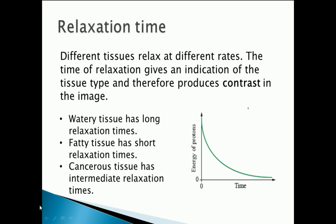The thing that gives you contrast on an MRI image is the fact that different tissues relax at different rates. MRI is very good for soft tissue contrast and distinguishing different types of body structure. The computer in the MRI machine measures the time it takes for the signal to die away, giving an indication of tissue type. For A-level purposes: watery tissues have long relaxation times, fatty tissues have short relaxation times, and tumours tend to have relaxation times somewhere in the middle. The relaxation mechanism is somewhat exponential.